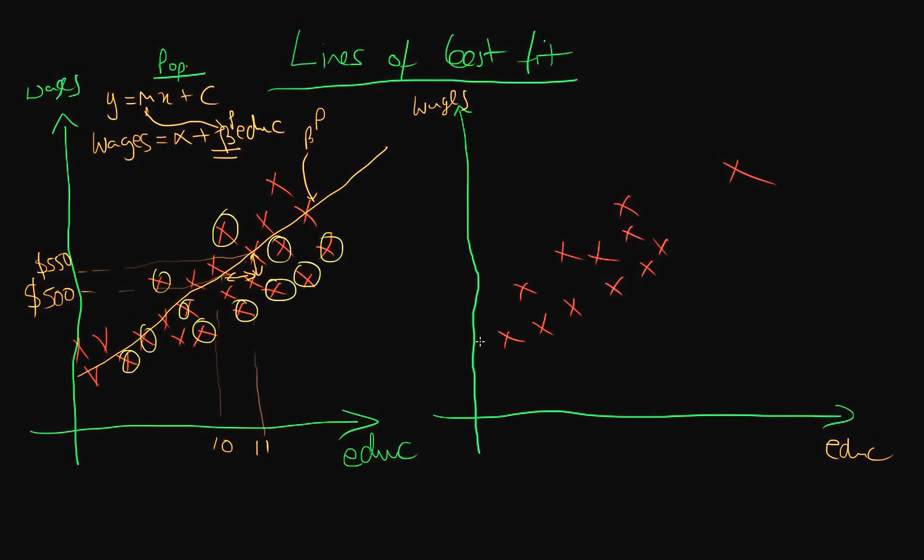So again here, normally what we do is we think about, okay, we've got our sample. Can I draw a line which is as close to the points as possible which we have from the sample? And this would be our line of best fit. In this case I'm going to call this slope beta S.